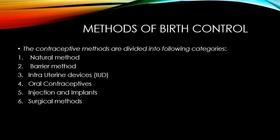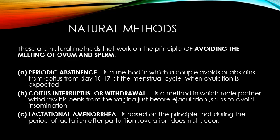We will discuss each method one by one. First is natural methods. These work on the principle of avoiding the meeting of ovum and sperm — there should be no fusion between the ovum and sperm. The main principle of the natural method is no mating between ovum and sperm, no fertilization, so that we can control the birth rate.